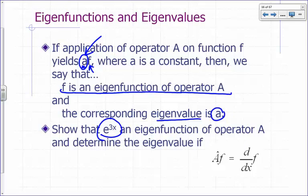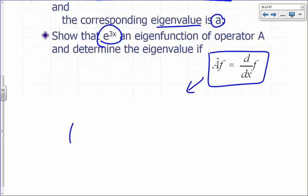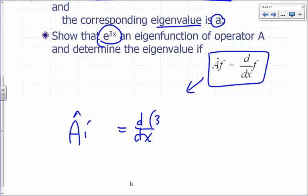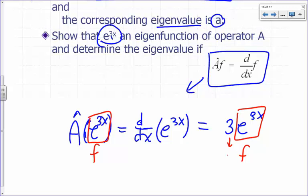Let's show that e^(3x) is an eigenfunction of operator A, and determine the eigenvalue, where operator A simply takes the derivative of the function. So A hat operating on e^(3x) would equal the derivative with respect to x of e^(3x). What's the derivative of e^(3x)? It's 3e^(3x). So we can see this is your function F, this is your function F again, and this is your constant A.